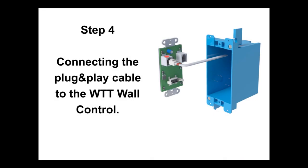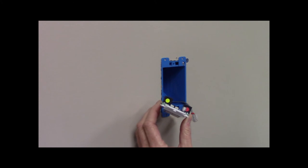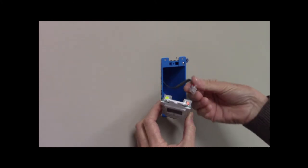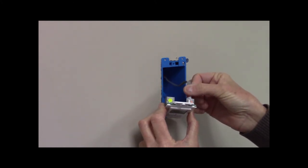Step 4 is connecting the plug-and-play cable to the WTT wall control. Insert the cable into the red connector on the back of the WTT, making sure the connector clicks.